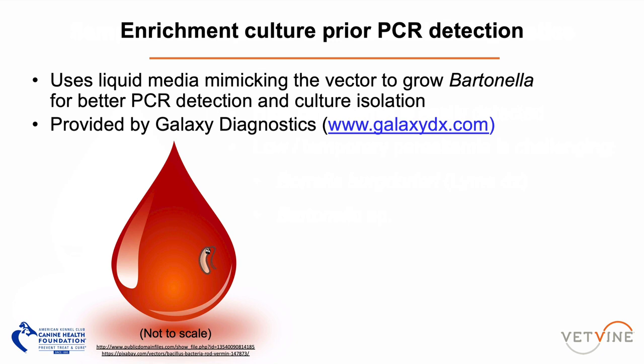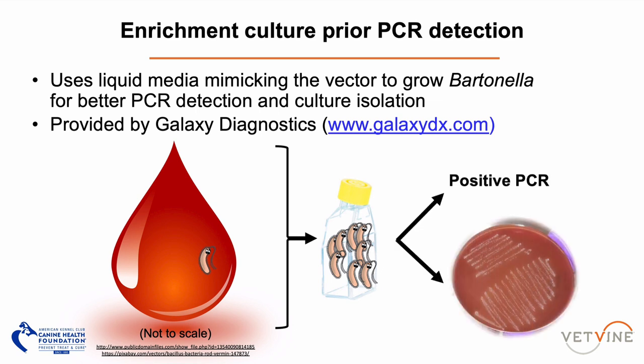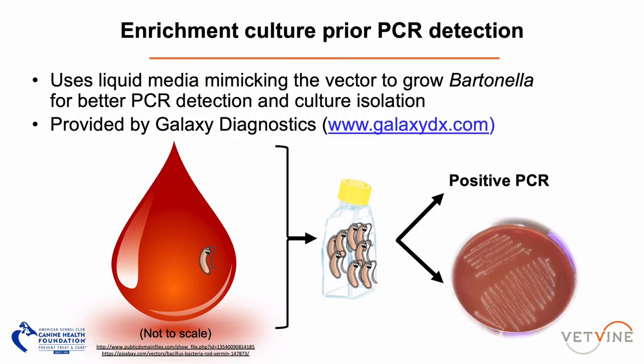Specifically for Bartonella, we have a way to improve detection. A group developed a liquid culture medium called BAPGM to increase the number of organisms. They grow the sample — even with very low amounts of Bartonella — in this liquid growth culture system to increase organism numbers, then perform PCR. This approach increases the number of your target so the PCR can detect it, and you can also obtain an isolate on a plate. Other labs use solid growth culture followed by PCR from isolates, which also helps, but requires a growth step that slows detection — Bartonella takes two weeks to a month to produce an isolate in the lab.